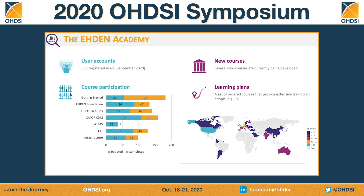At the latest count, more than 380 people have registered to the Academy, with a major concentration in Europe where the Eden Project is based, but also outside of Europe — for example in the US, we're seeing an increasing number of registrations. On average we have more than 100 students enrolled into each course, and a bit more than a third of them complete their courses, which is perfectly fine. You can audit a course without taking the exams, because there is no time limit on the enrollment and the enrollment is free.